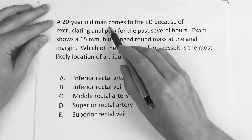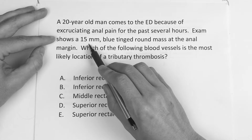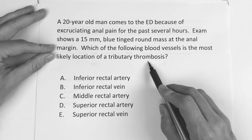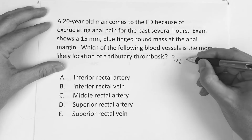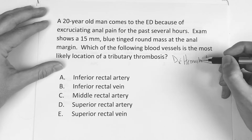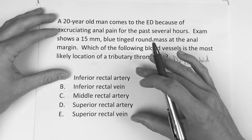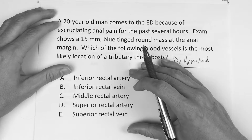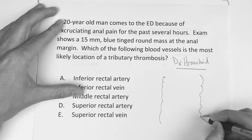Alright guys, so the first question says: a 20-year-old man comes to the ED because of excruciating anal pain for the past several hours. An exam shows a 15mm blue-tinge round mass at the anal margin. Which of the following blood vessels is the most likely location of the tributary thrombosis? We know the diagnosis, just based on this and the title of the video, is going to be a hemorrhoid. For the step exam, they'll probably ask either the type — internal or external — but the emphasis is really on anatomy and mechanism. If you get a question like this, be thankful, because you can pretty much get it right with certainty.